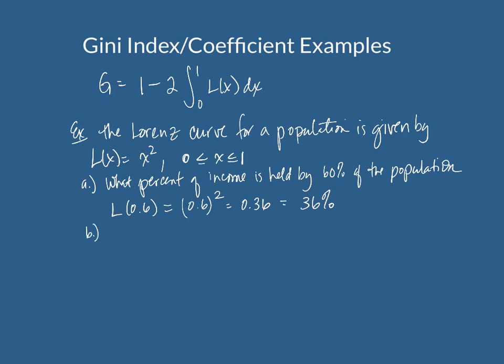Part B is calculate the Gini index. So Gini is 1 minus 2 times integral from 0 to 1 of the Lorenz curve, and this Lorenz curve is x squared.